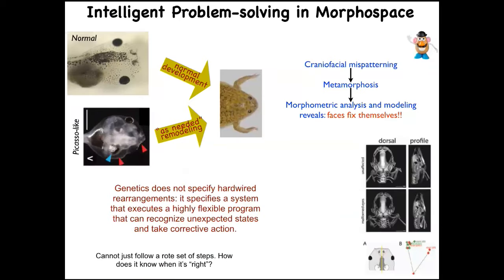Here's one simple example nailing down this point. These are tadpoles of Xenopus laevis — eyes, brain, nostrils, mouth. They have to rearrange their face to become a frog. People thought this was a hardwired process. We decided to test it by making what we call Picasso tadpoles — scrambling all the craniofacial organs, with eyes on top of the head and the mouth off to the side. The amazing result: they become pretty normal frogs, because all the components move through novel, unconventional paths to get where they need to go.